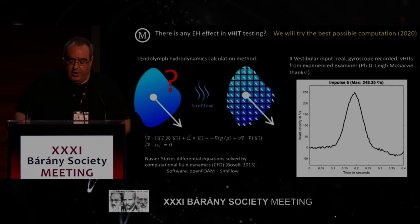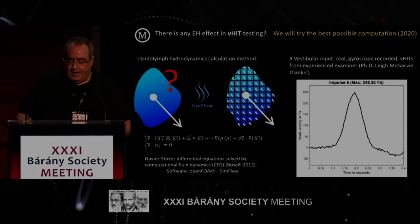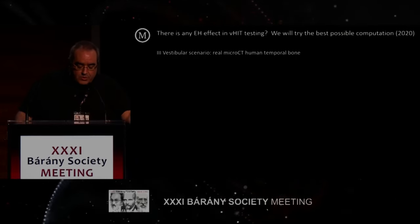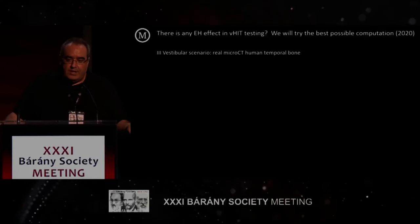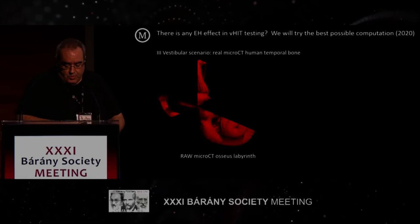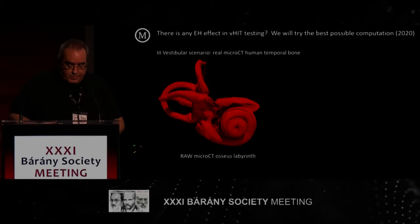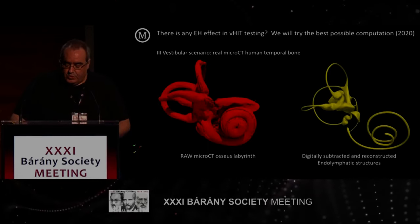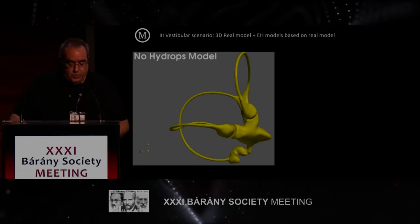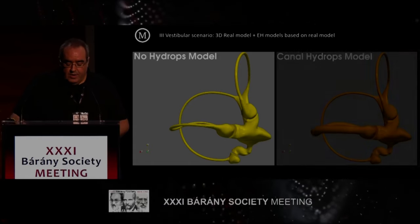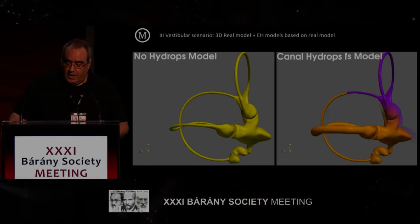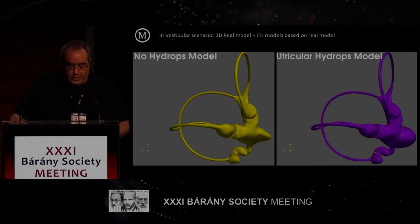In our model, we used real gyroscope-recorded overheats of the head movement made by an experienced examiner — thank you very much, Leigh McGarvey, for your contribution with those recordings. The third point in our model is the vestibular scenario. We decided to use a real geometric model of the vestibular organ, so we performed a micro-CT scan of a temporal bone, then digitally subtracted and reconstructed the endolymphatic ducts and structures. We put this together to create our normal anatomic model, and we developed one model with endolymphatic hydrops affecting the semicircular canal and another with utricular hydrops.